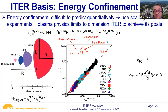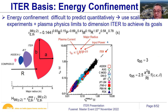To get a fusion gain of 10 — meaning twice the alpha heating compared to external heat — ITER must have its specific dimensions due to the dependencies of the scaling law. This is the basic principle of the ITER design.